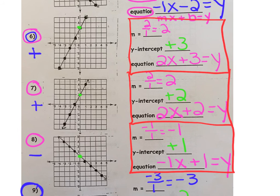Here are the correct answers for six, seven, and eight. You should have gotten a slope of two, an intercept of plus three or positive three. And your equation, two x plus three equals y.